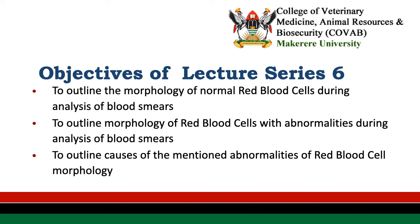The objectives of lecture series six are: first, to outline the morphology of normal red blood cells during analysis of blood smears; second, to outline the morphology of red blood cells with abnormalities during analysis of blood smears; and lastly, to outline the causes of the mentioned abnormalities of red blood cell morphology.